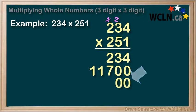So now we'll do it again with the 2. 2 times 4 equals 8. 2 times 3 equals 6. Nothing to carry. 2 times 2 equals 4.